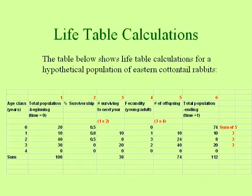The next column, column four, is a column that measures fecundity. Fecundity we can define as the number of young produced per adult. So young of the year produced no young, but one-year-olds produce one young per adult. Two-year-olds produce three young per adult, and so on.